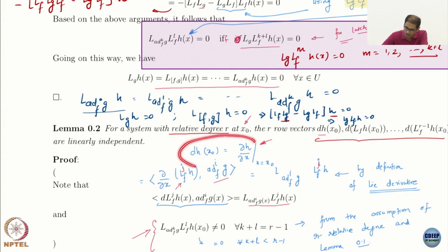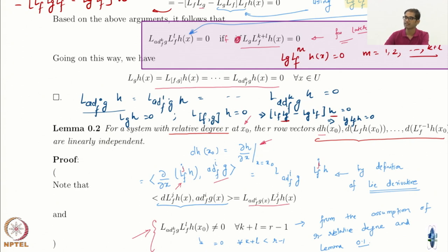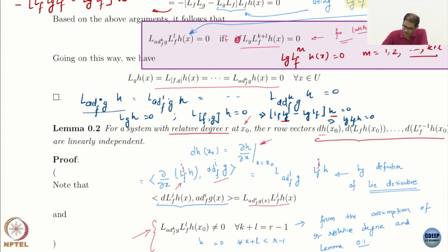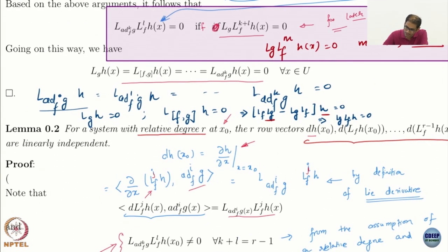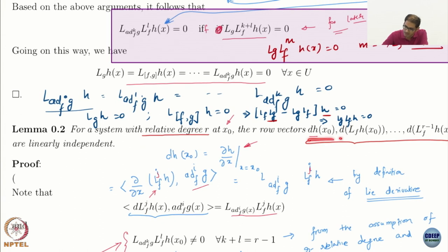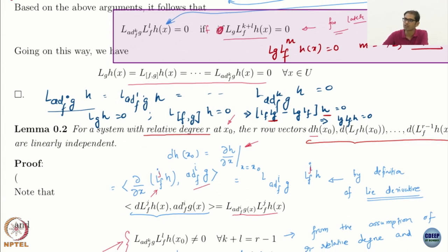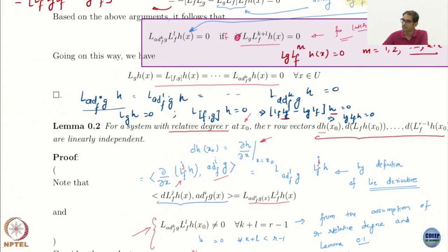The vectors dh, d(Lf h), … are simply ∂/∂x applied to h, Lf h, and so on. h is a scalar-valued function, and these row vectors appear naturally in successive derivatives of the output — this comes up in the first derivative of h, the second derivative, and so on.